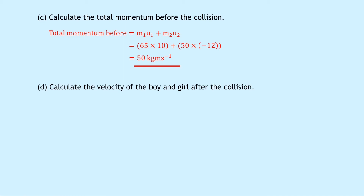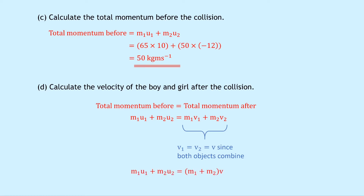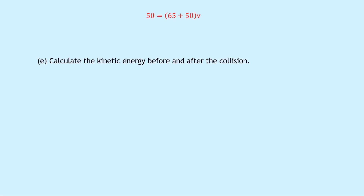Part d asks to calculate the velocity of the boy and girl after the collision. Using conservation of momentum: m1·u1 + m2·u2 = (m1 + m2)·v. The left-hand side is 50 (our answer from part c), so 50 = (65 + 50) × v, giving 115v = 50. Dividing by 115: v = 0.4 meters per second — positive, confirming motion to the right.